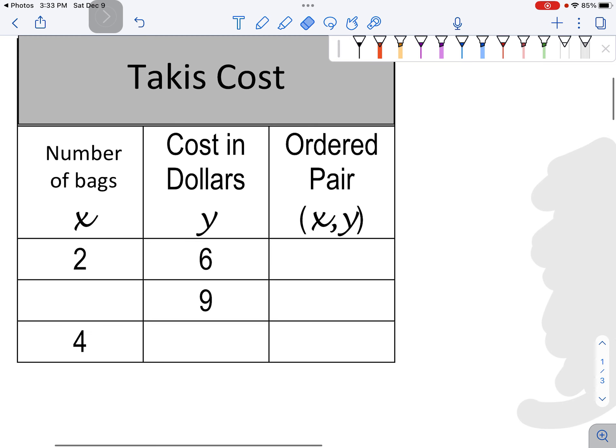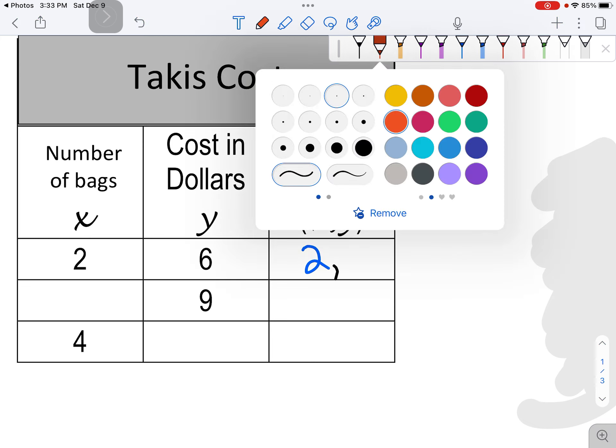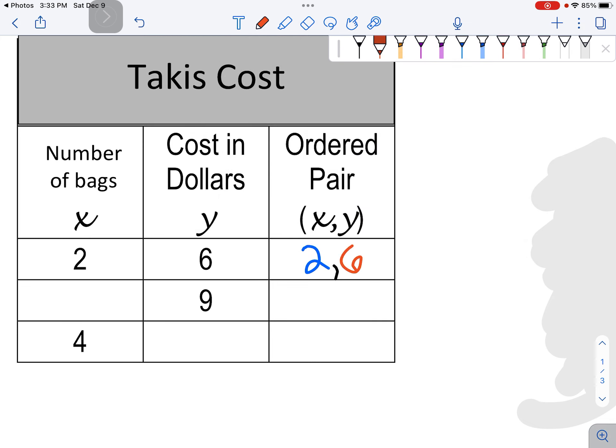Let's jump into it. Two bags cost $6, so the ordered pair for this problem is 2 comma 6. Didn't expect that to happen. 2 comma 6, parentheses. So where did the 2 come from?